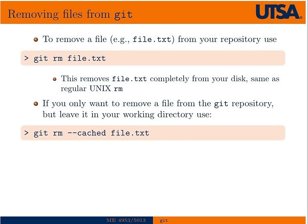If you'd like to remove a file from Git, you use 'git rm'. Done this way, it actually removes the file from your disk just like the regular remove command would. However, if you simply want to remove it from the Git index but keep the file on the disk, you'd use the same command with the '--cached' option.